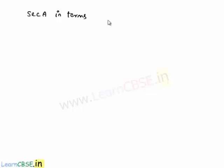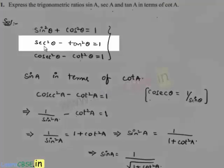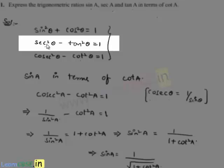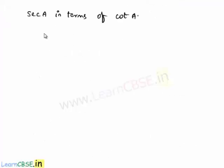Now let us express secant a in terms of cot a. In order to express secant a in terms of cot a, it is better to consider the identity secant squared theta minus tan squared theta equals 1. Secant squared theta is already available, and if we can express tan theta in terms of cot, we can establish a relation between secant theta and cot theta. So considering that identity and replacing theta with a: